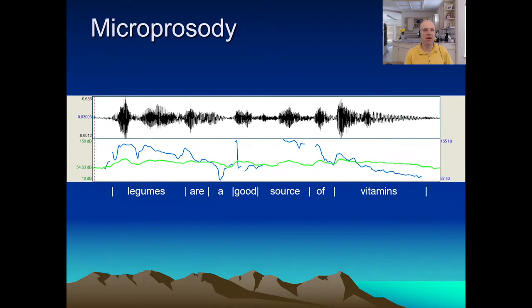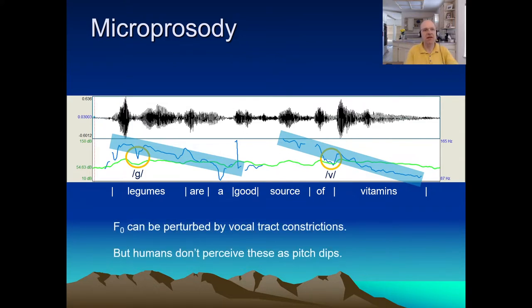And third, there are issues due to microprosody. When I say legumes are good, probably what you're hearing is a smooth pitch declination. Same for the second part of the sentence. You're probably not hearing those little dips. Those are there due to obstructions to the airflow. That is to say, the F0 can be perturbed by vocal tract constrictions. So for the G in legumes, for a moment my tongue comes up, blocks the airflow entirely, and the vocal folds still manage to vibrate, but they don't have enough push to vibrate at the same frequency. And a V doesn't stop it entirely, but it slows it down. So, although these things are there acoustically, and it's true articulatorily, perceptually, we don't perceive those as pitch dips.